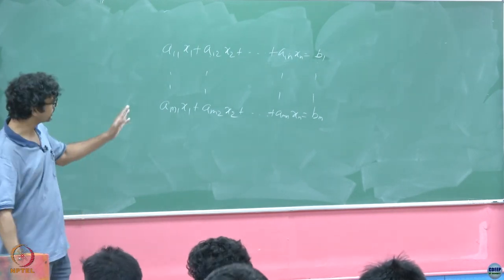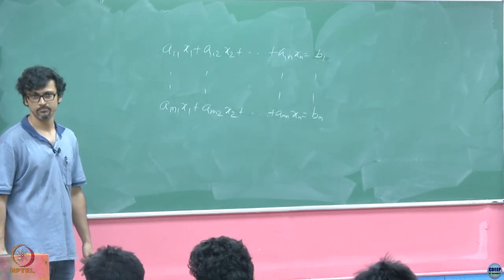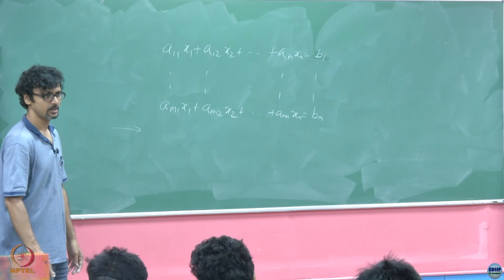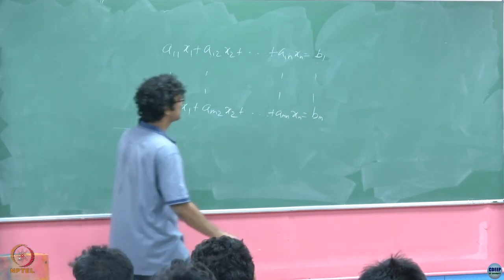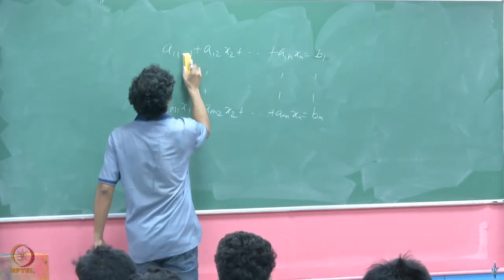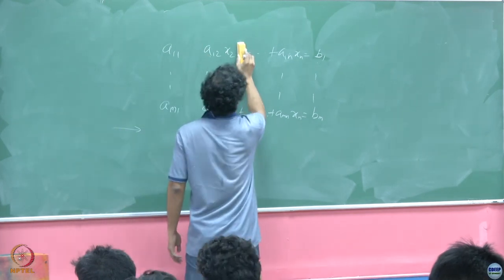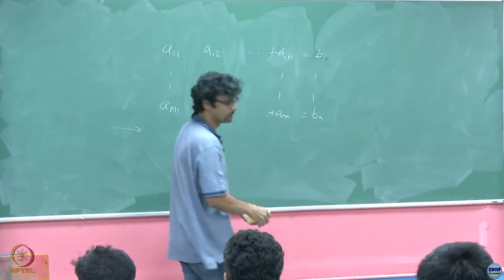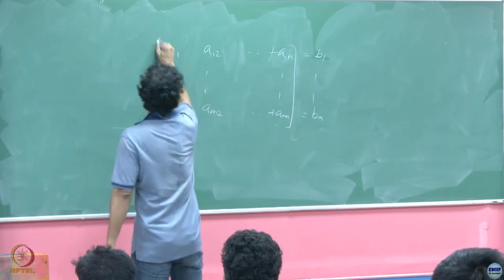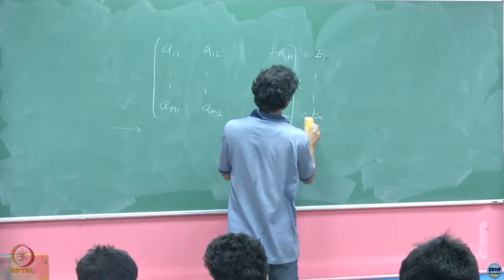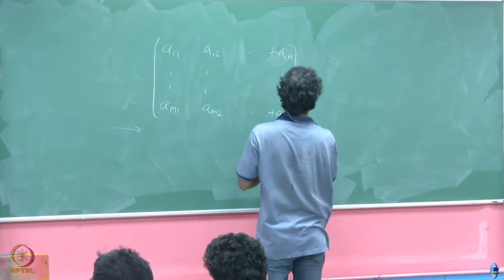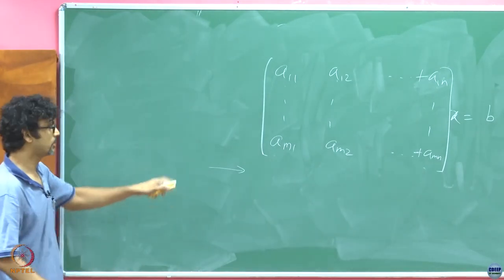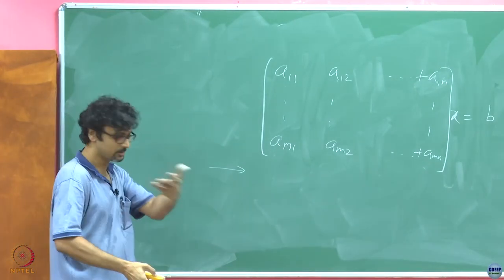Now, think of this as a matrix. What is actually going on when you are cooking up the m plus first equation? I can erase this, so I can afford to, but of course you cannot from your answer book, so you will have to write it again. I will just write this as x and this as b.